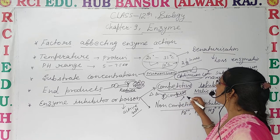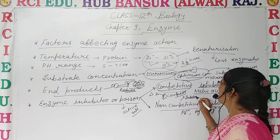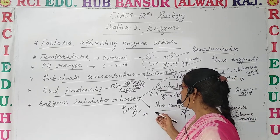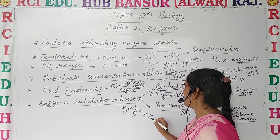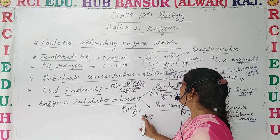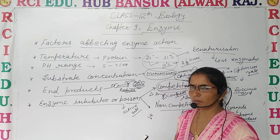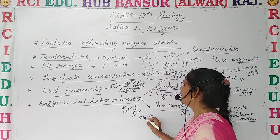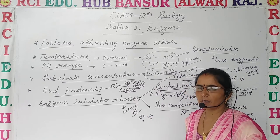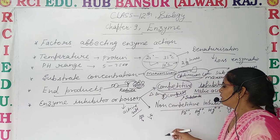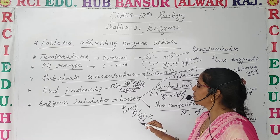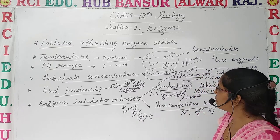We can reduce competitive inhibition by increasing the concentration of the main substrate. For example, if the competitive inhibitor is present 50 times, and we increase the main substrate to 100 or more, the main substrate will bind more easily with the active sites of the enzyme, reducing competitive inhibition.